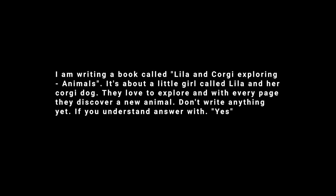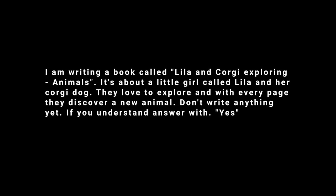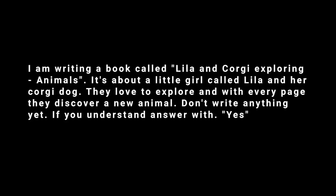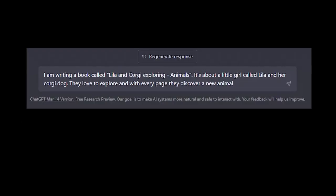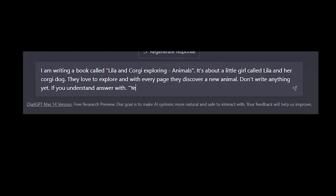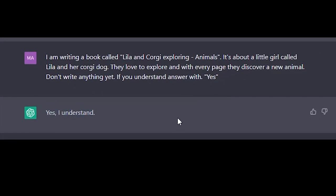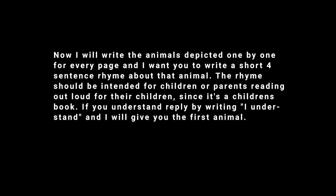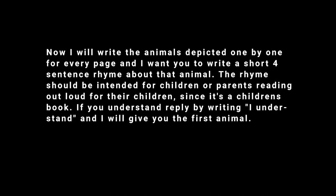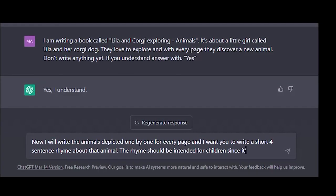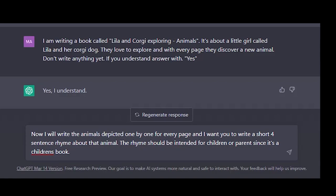I usually start by telling ChatGPT what I am trying to do. In this case, I write: 'I'm writing a book called Lila and Corgi Exploring Animals. It's about a little girl called Lila and her Corgi Dog. They love to explore and with every page they discover a new animal. Don't write anything yet — if you understand, answer with yes.' For the next prompt, I ask it to write a short four-sentence rhyme for each animal, intended for children or parents reading aloud.